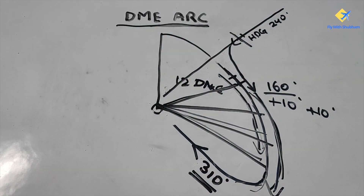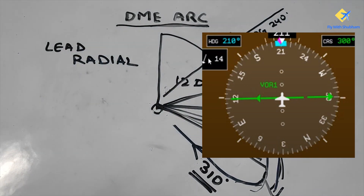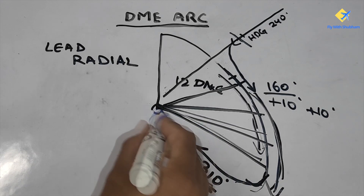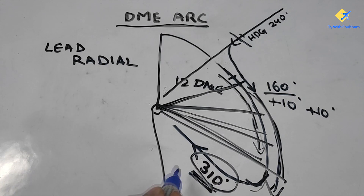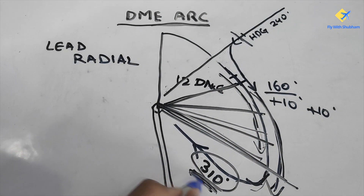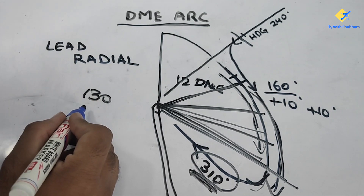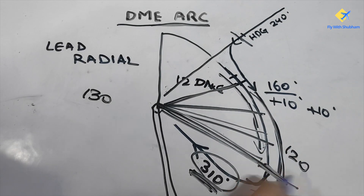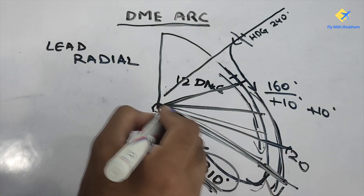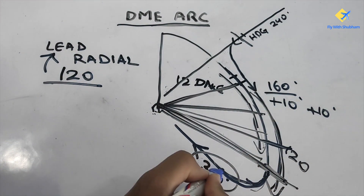One important factor to know about your DME arc is the lead radial. This is the final radial you will cross before turning inbound to the final approach course. The lead radial is always 10 degrees either side of the final approach course. If the final approach course is 310, the radial for that is 130 (310 minus 200 plus 20). So the lead radials are 120 on one side and 140 on the other. On this DME arc, once you reach the 120 radial crossing on your instrument, you begin turning slowly inbound toward the final approach course of 310.